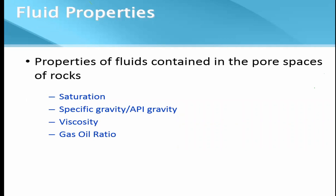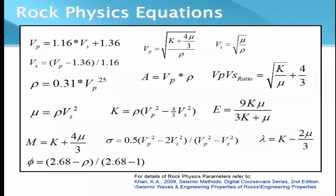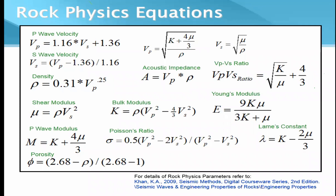There are three essential parameters. The very first equation is Castagna's equation, from which we can derive the shear wave velocity that is not directly available — derived from the P-wave velocity. Then we have Gardner's equation, through which we can compute density from the P-wave velocity. So considering these two equations, if we have just the P-wave velocity we can compute both the S-wave velocity and the density. Once we have these three things, we can compute all the elastic parameters.